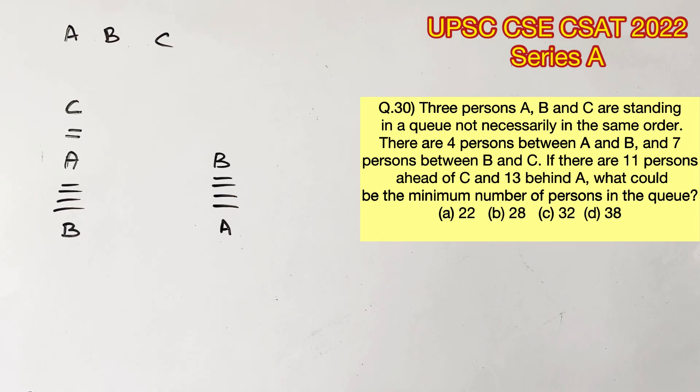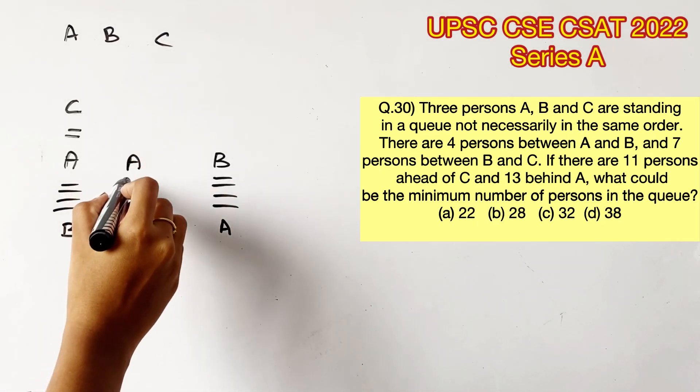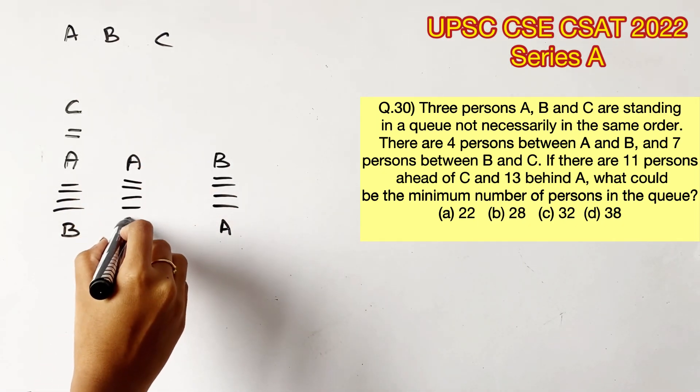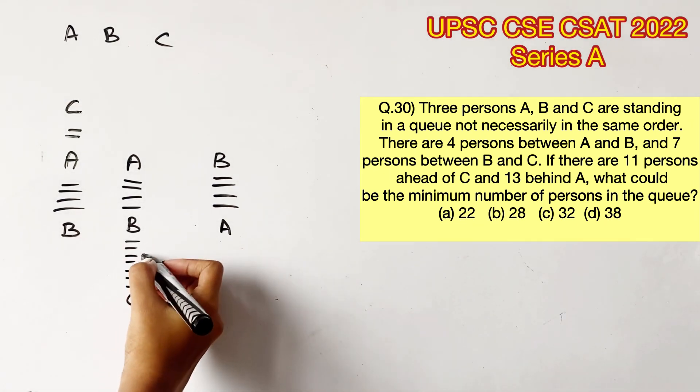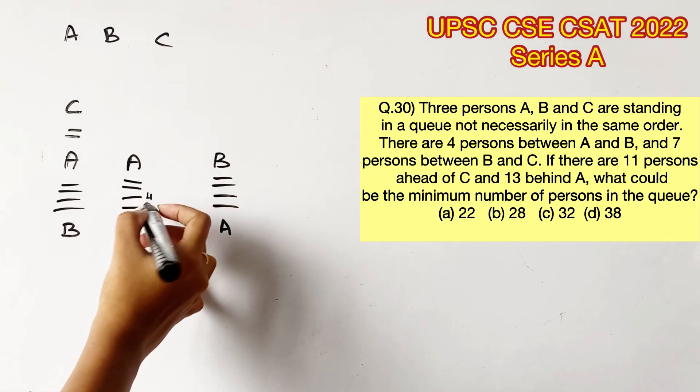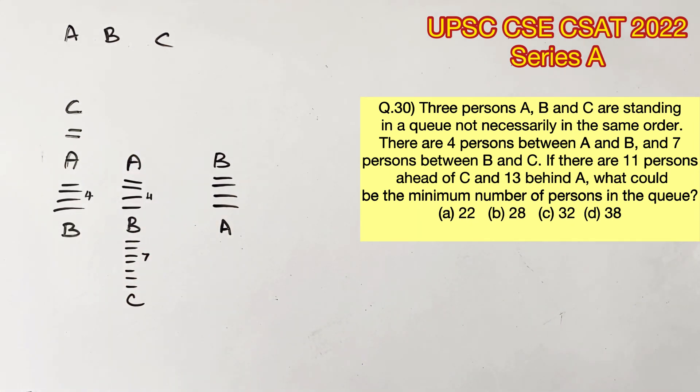Now let's put the same order but let's put C at the bottom. So between B and C there are 7 people now. I am just marking the number of people by the side so that it will be easier for us. Don't forget that we have to count even A, B and C as 1 person. So I am marking them as well.